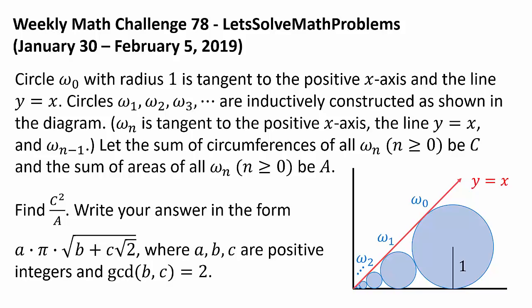Circles omega-1, omega-2, omega-3, and so on are inductively constructed as shown in the diagram. Omega-sub-n is tangent to the positive x-axis, the line y equals x, and omega-sub-n-minus-1.